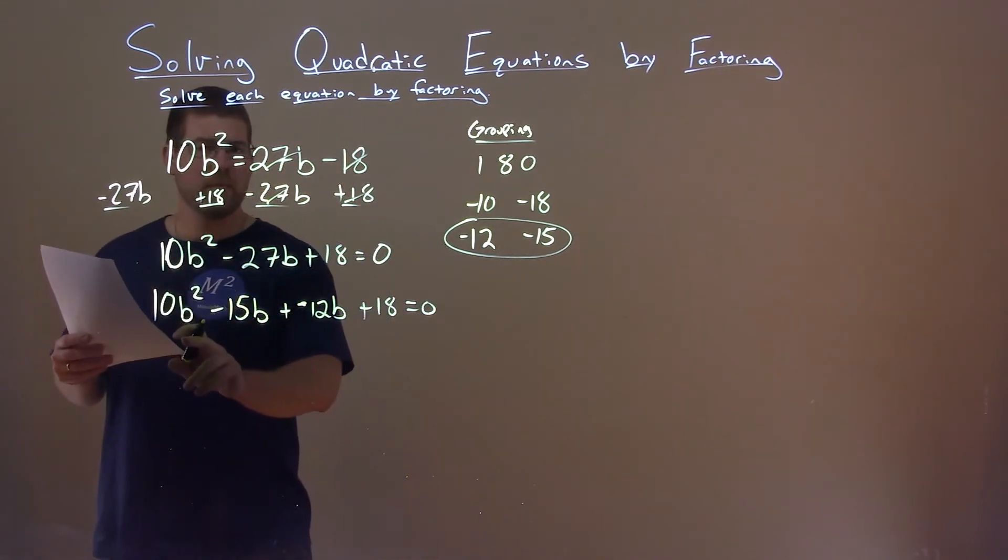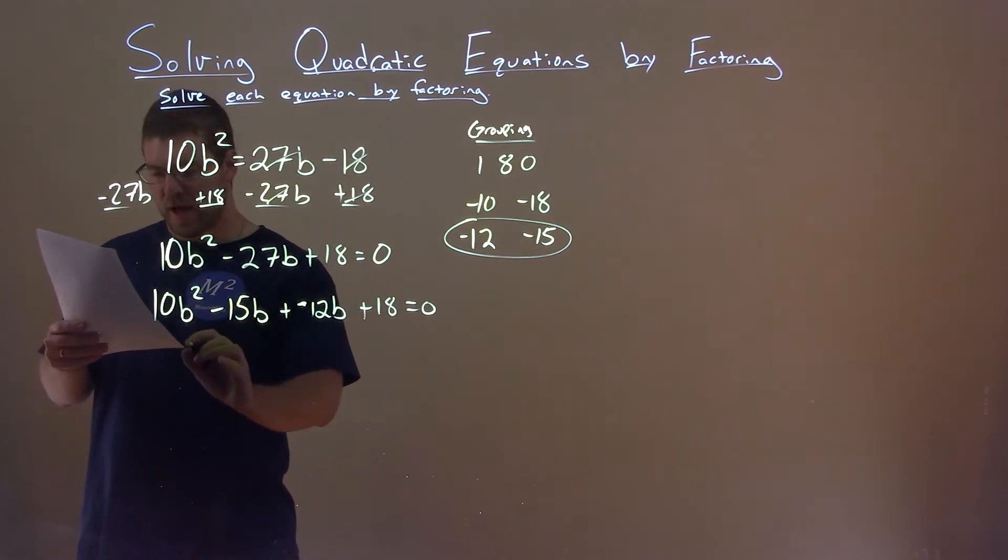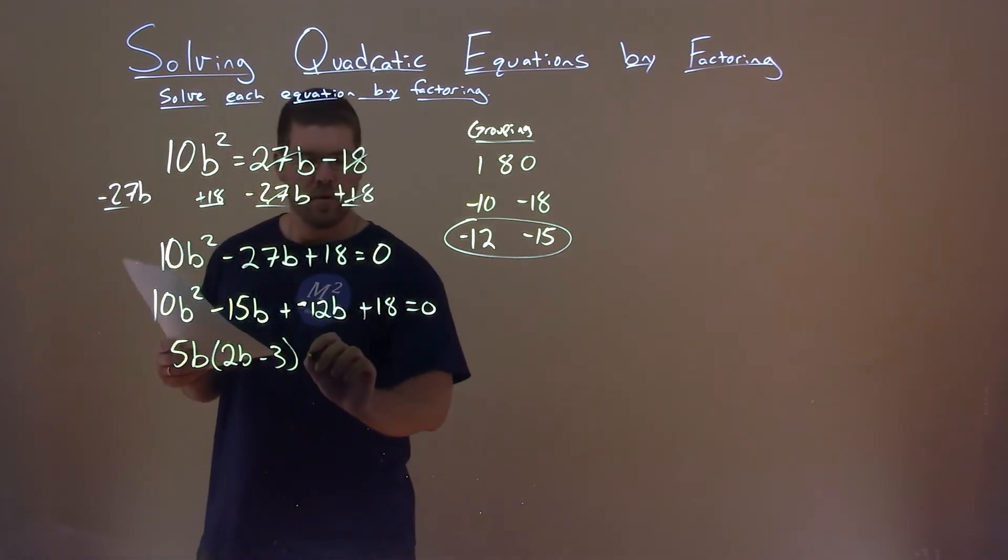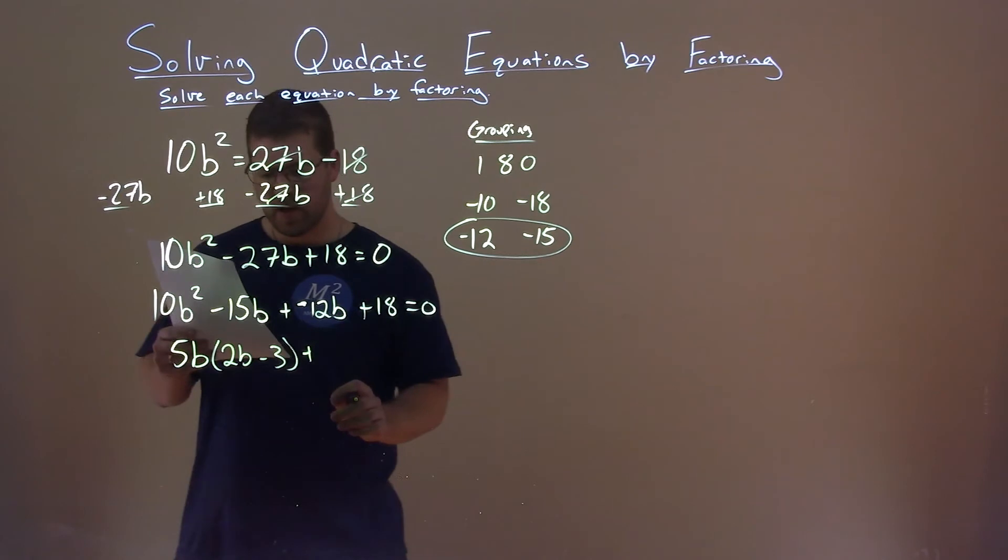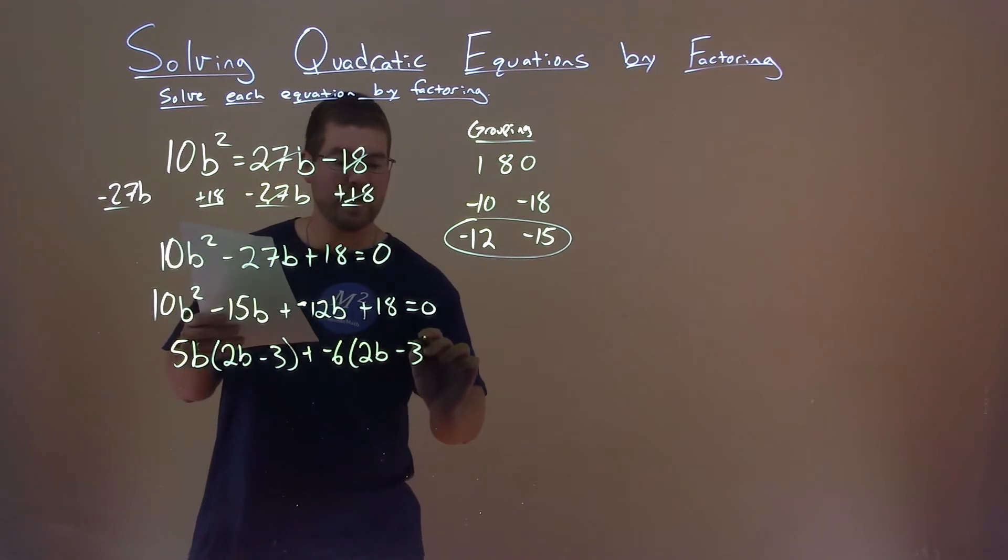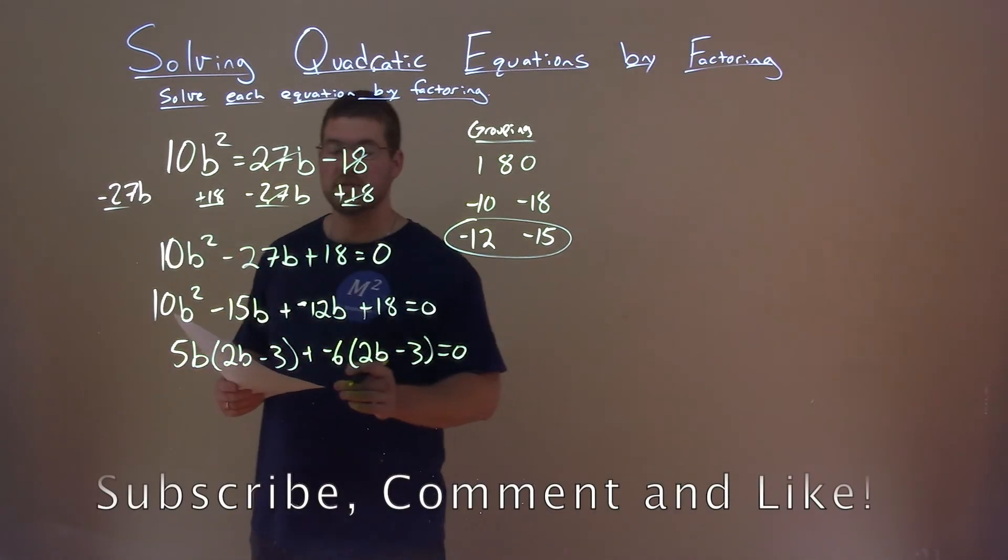Well, let's pull out some common factors. 10b squared and negative 15b both have a 5b in them, and when I pull that out, I'm left with a 2b minus 3. We're going to do the same thing with the right-hand side. A negative 6 is in both parts, and we're left with a 2b minus 3 here, and that's equal to zero.